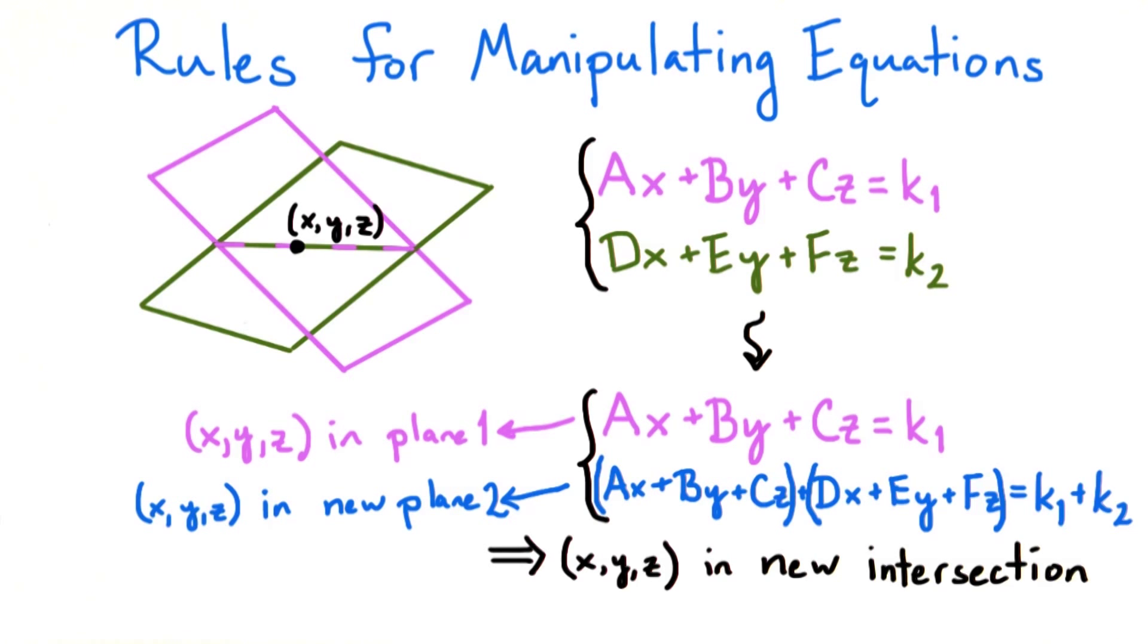Also, because we can easily reverse this operation by subtracting the first equation from the second in the new system, this means that the new intersection does not contain any points that weren't in the old intersection. So the intersections are the same, so the solution set is preserved.